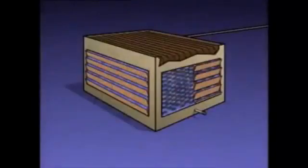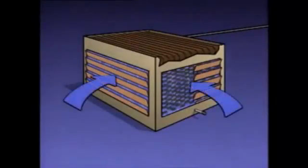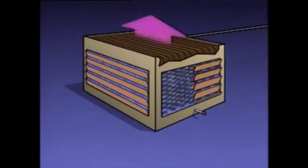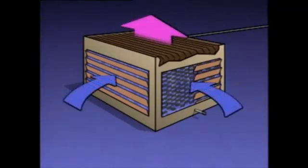Even though all cooling towers operate on the same basic principles, their designs can be divided into two broad categories: natural draft towers and mechanical draft towers. The term draft refers to the flow of air through the tower. In a natural draft cooling tower, air flows through the unit naturally without the aid of mechanical devices. As the water evaporates and heats the air, the air inside the tower becomes warmer and less dense than the surrounding air. As the less dense warm air rises up through the tower, denser, cooler outside air is drawn into the bottom of the tower.